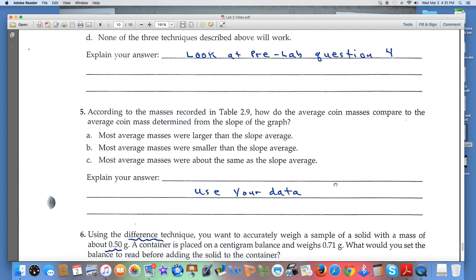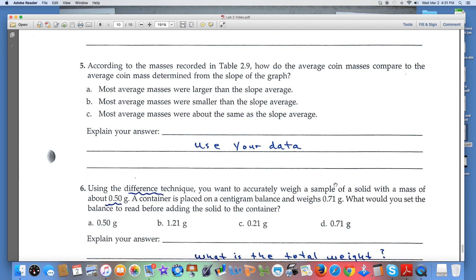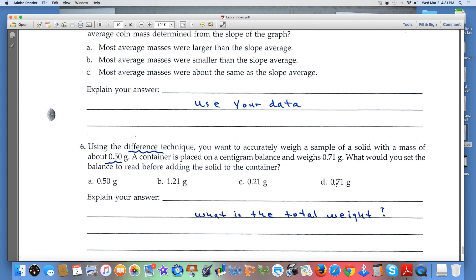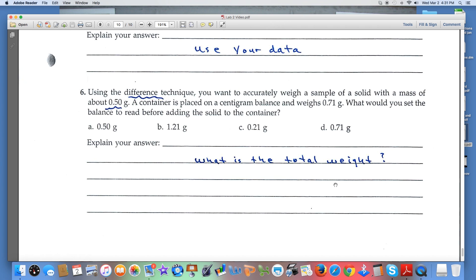Number five: we're comparing average coin masses. Use your data that you obtained from this experiment and you'll be able to answer question five. Number six: we're weighing by difference. We want a solid that weighs 0.50 grams, the container weighs 0.71 grams. We're really asking what's the total weight?